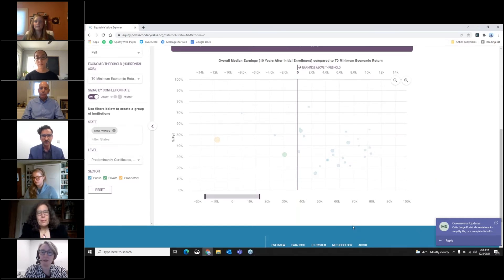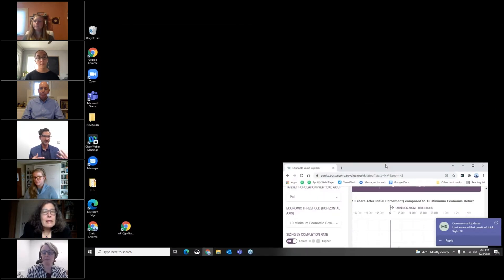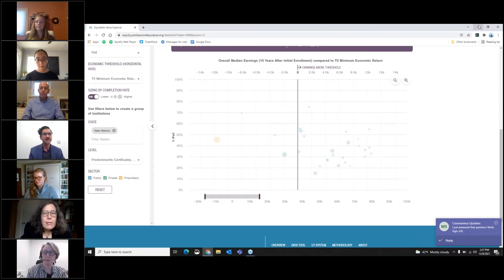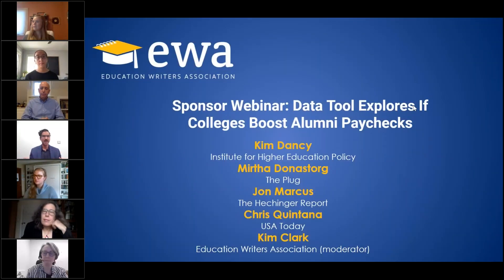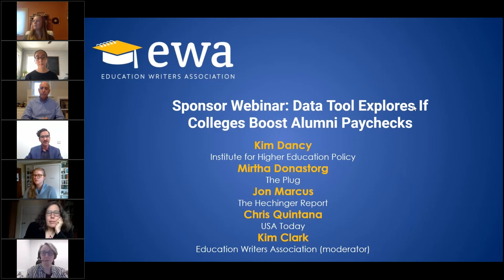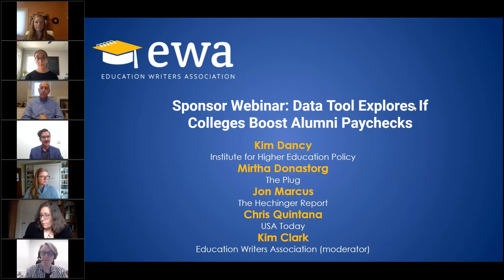There's another university in New Mexico with exceptionally high earning rates for its students, but only about 30% of its students are Pell recipients. It's heavily STEM and heavily male. You can get all that information just from looking at the value tool. From an accountability perspective, especially for reporters covering a large geographic area, it's so helpful to see that played out and to see that maybe the public flagship isn't the one serving the most students most effectively — which can highlight other institutions that may be doing things a little differently.